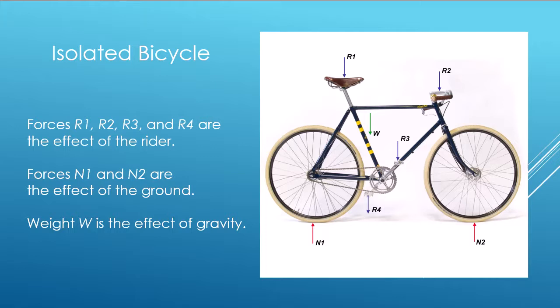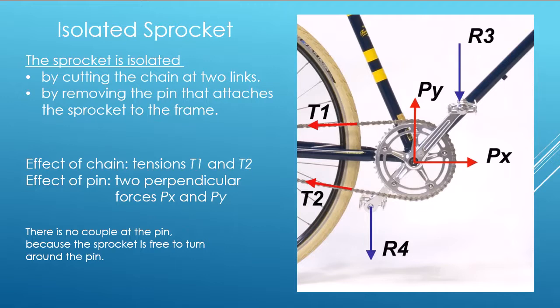If we want, we can look at the Free Body Diagram of individual parts. So, first, what we do is we remove this pin here that attaches this sprocket with the body of the bicycle. Also, we cut the chain at two locations, here and here.